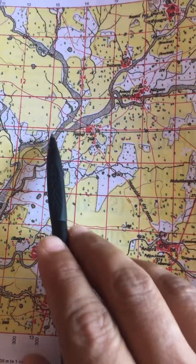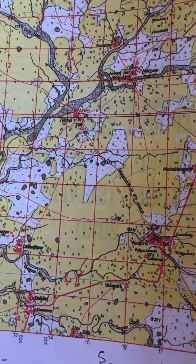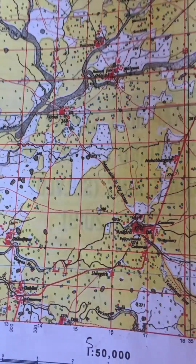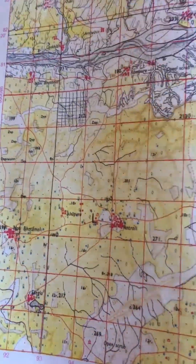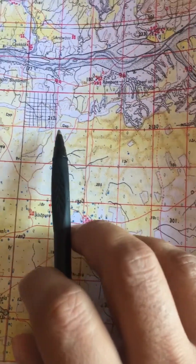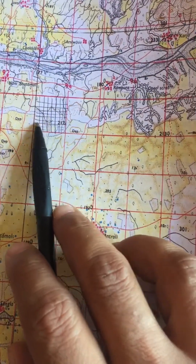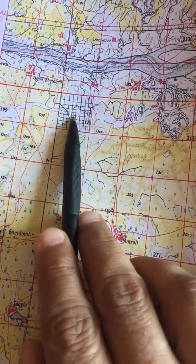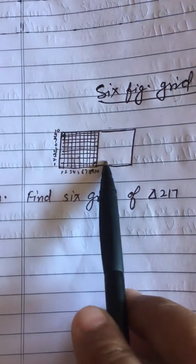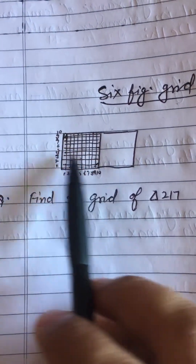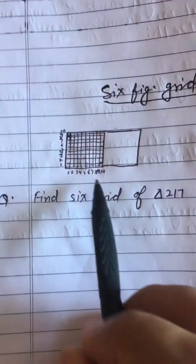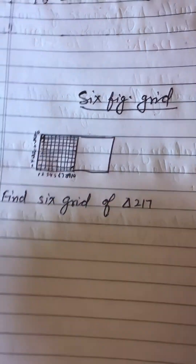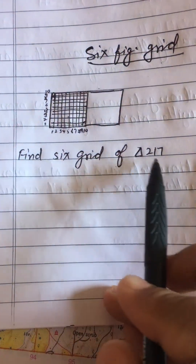Now let's come to the six-figure grid reference. Every topo sheet has a number of boxes. To find a six-figure grid reference, we need to divide each box into a 10 by 10 grid. I have done this here — the box is divided into 10 vertical lines and 10 horizontal lines. The question is: find the six-figure grid reference of triangulated height 217.